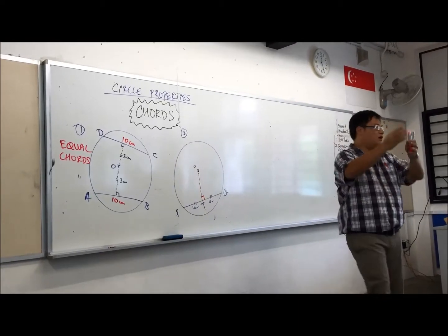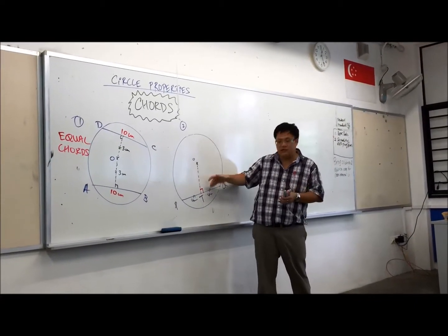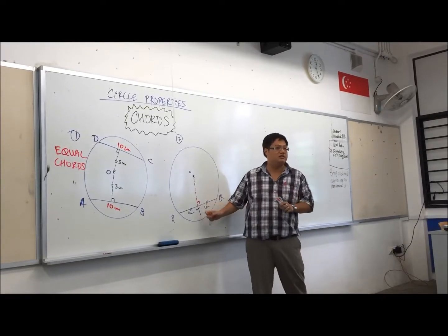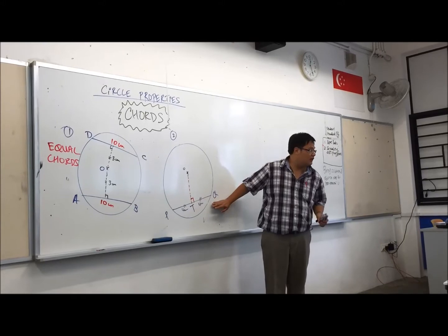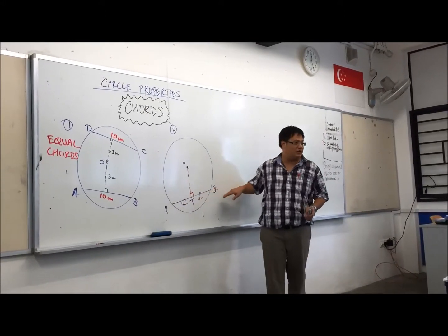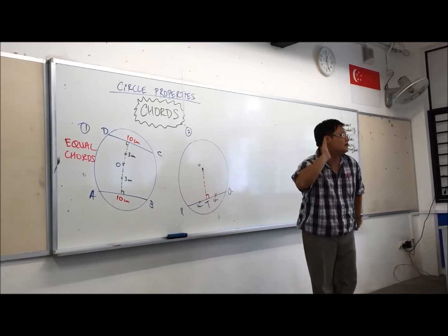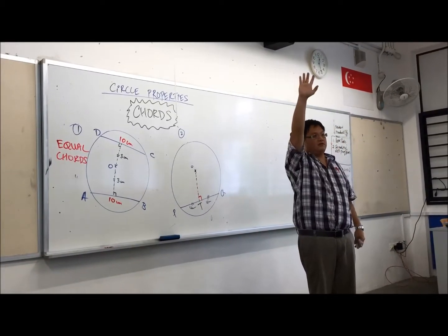We just reiterate what Rashika has mentioned. If I have a straight line OT, if it cuts at 90 degrees, then it must bisect the chord. Are we clear? Likewise, if it bisects the chord, it must cut at 90 degrees. Are we clear? Yes or no? Yes.